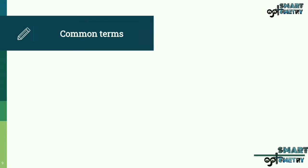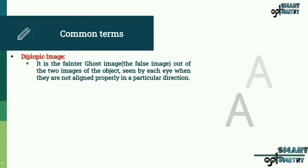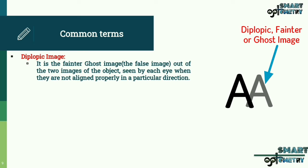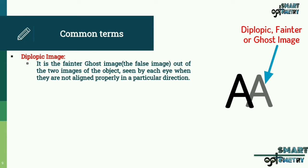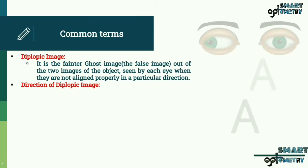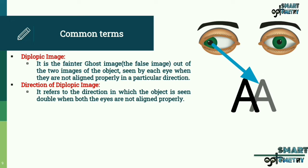Common terms. Diplopic image: the diplopic image is the fainter ghost image — that is, the false image out of the two images of the object — seen by each eye when they are not aligned properly in a particular direction.